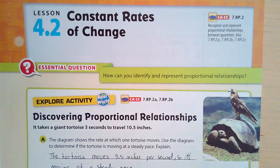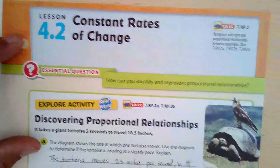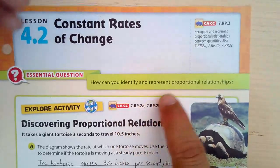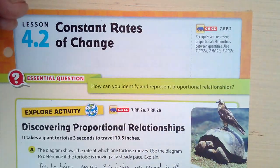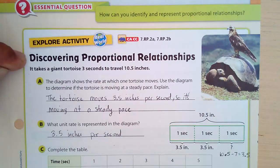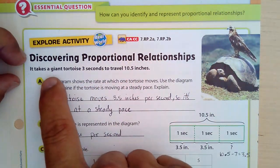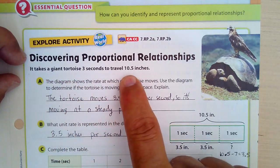All right, you're going to learn about constant rates of change, lesson 4.2. It's on page 123. And we're going to learn how you can identify and represent proportional relationships. So some new vocabulary in this as well. In this explore activity,